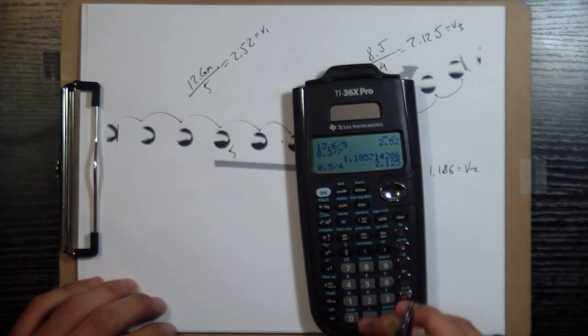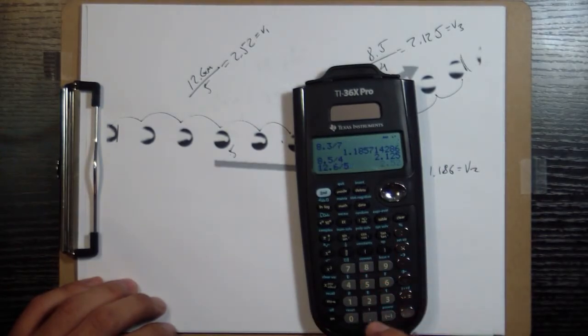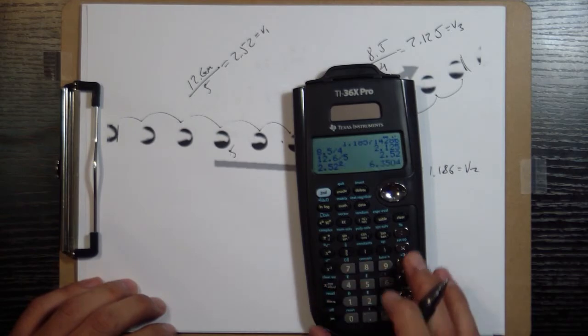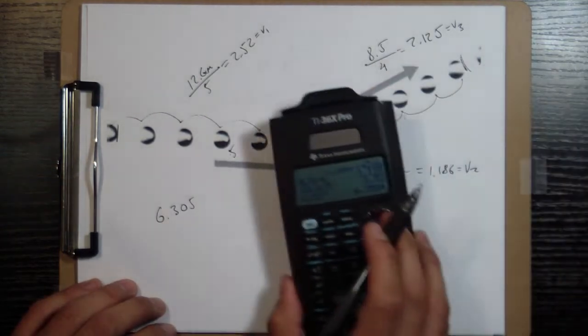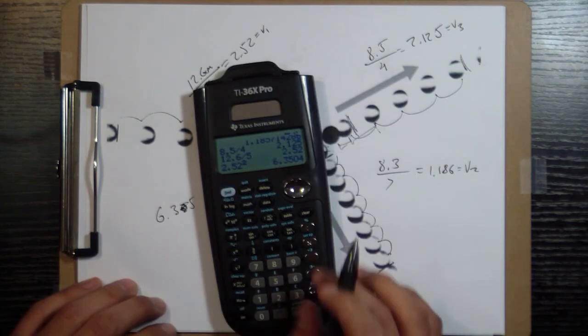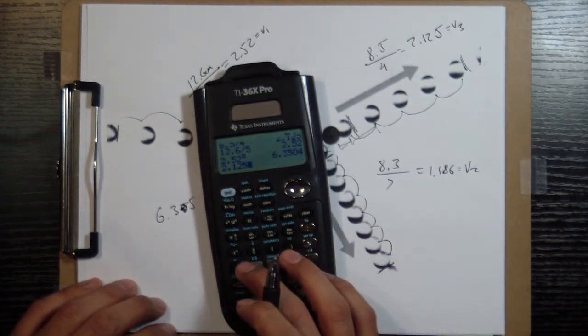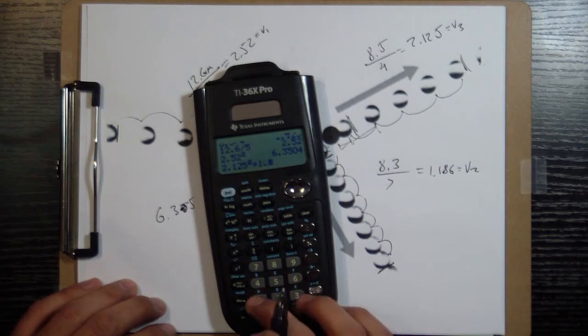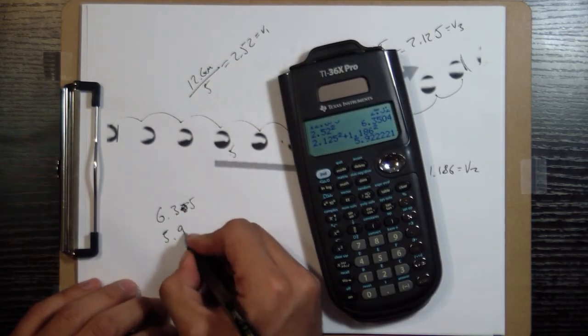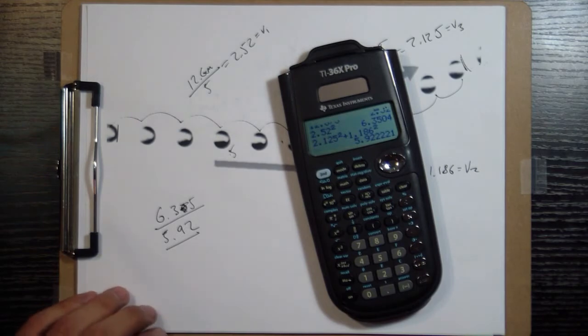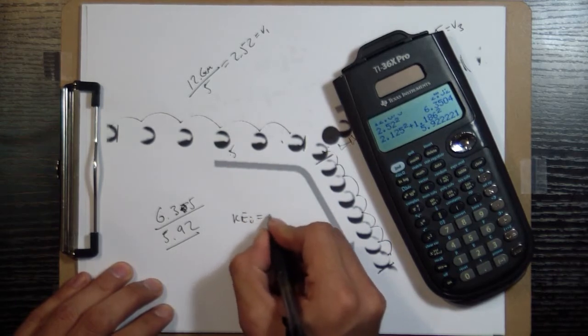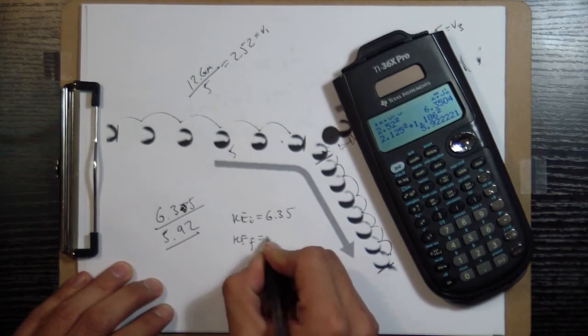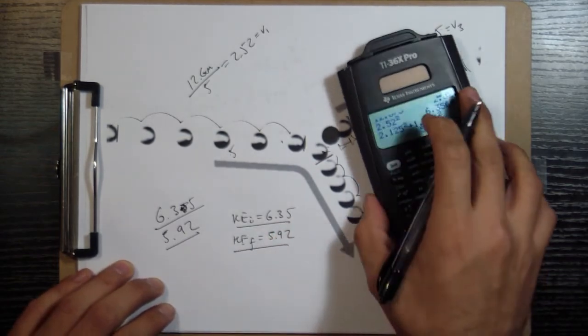And if I square them, so 2.52 squared, 6.35. 2.125 squared plus 1.186 squared, 5.92. So there's a decent difference. Kinetic energy initial 6.35 and kinetic energy final 5.92.